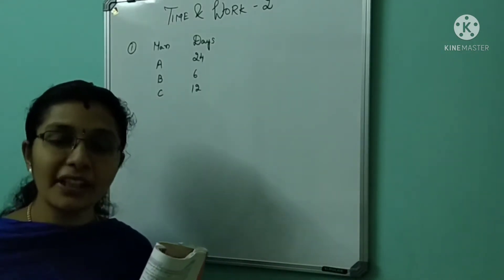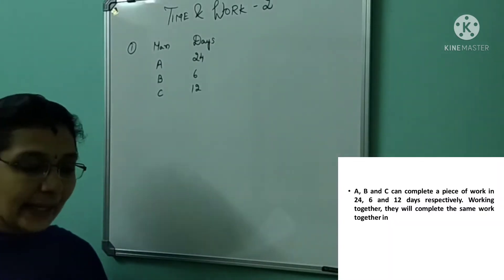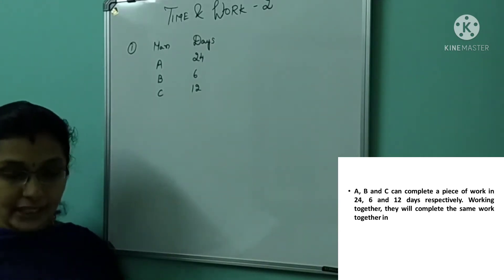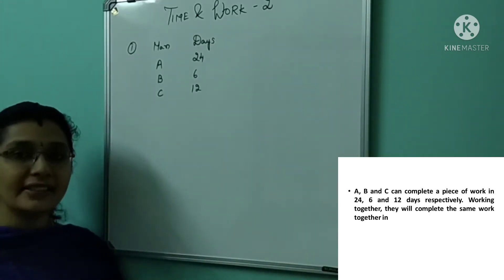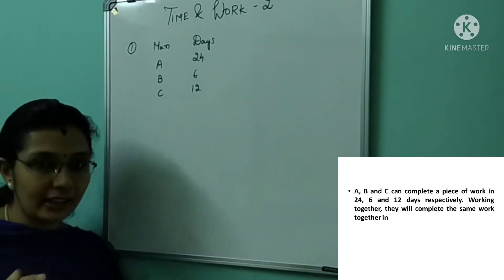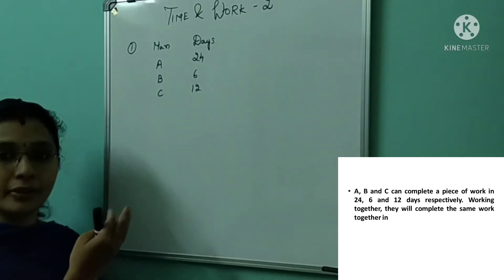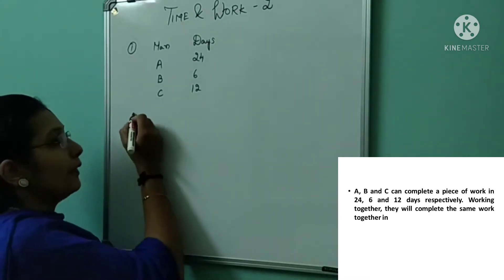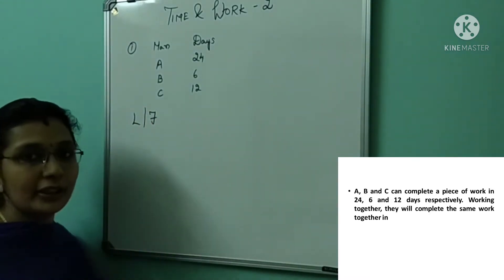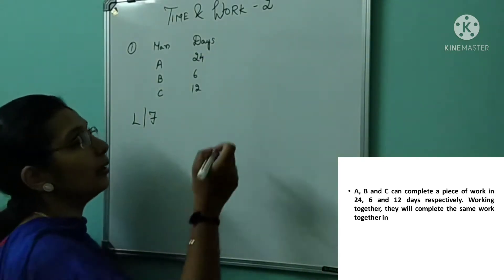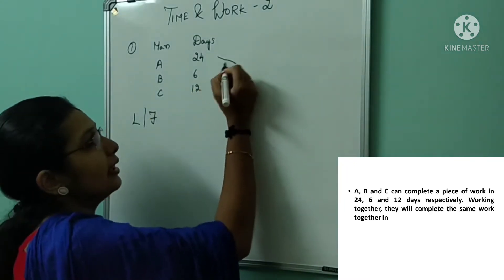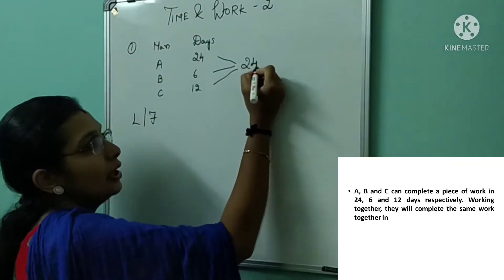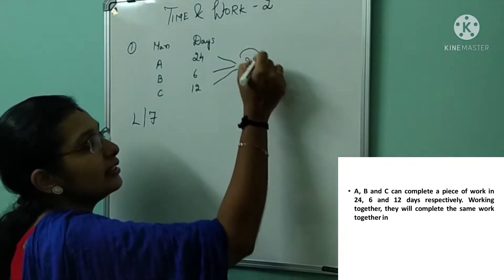Those who have watched my previous video can definitely crack this question easily. A, B, and C can complete a piece of work in 24, 6, and 12 days respectively. They'll complete the same work together in how many days? So they have given three persons and the time taken by them to complete certain work. If they're working together, how many days will they complete the work? You can either go with LCM or fraction method. Here I'm using the LCM method. First find the LCM for all three numbers — 24, 6, and 12 — which is 24.